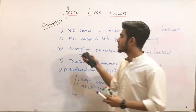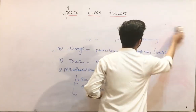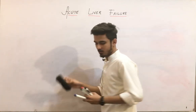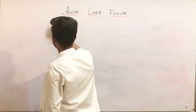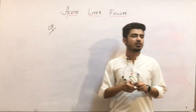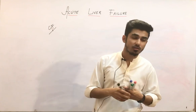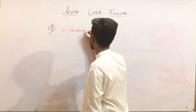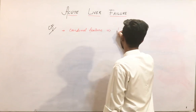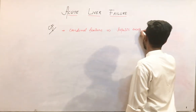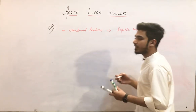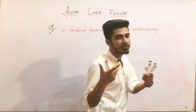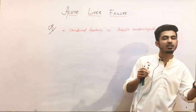Now moving on to clinical features — how are you going to diagnose acute liver failure? Initial or common clinical features include nausea and vomiting, and jaundice may also be present. But the cardinal feature we are talking about here is hepatic encephalopathy.